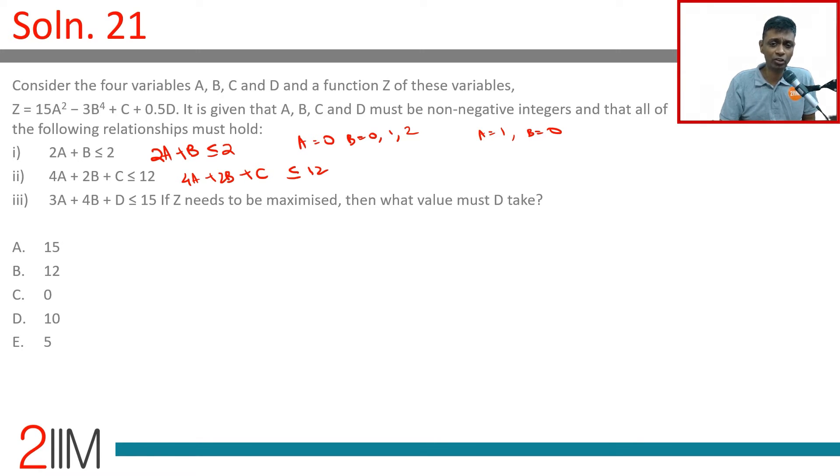(0,0), (0,1), (0,2), (1,0). We have -3B⁴. Therefore, it is in our interest to keep B as small as possible.